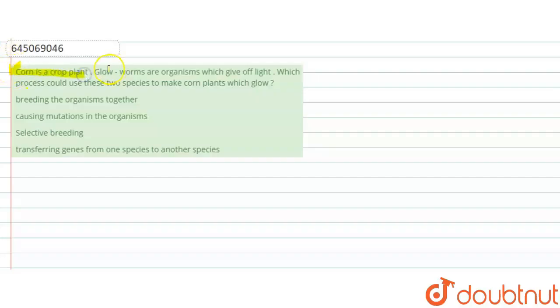The question says corn is a crop plant, glowworms are organisms which give off light, and which process could use these two species to make corn plants which glow. So the question is about how the corn plant, which is a crop plant, is combined with the glowworm, which is an organism.